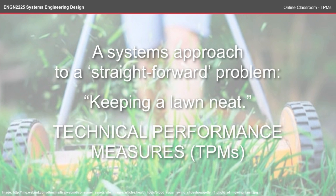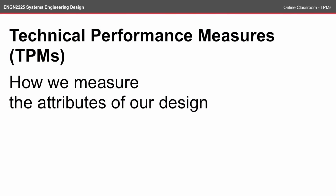In this episode of the online classroom, we're going to look at technical performance measures for a systems approach to a straightforward problem: keeping a lawn neat. Technical performance measures, often called TPMs, are how we measure the attributes of our design. This helps us understand how we will measure and whether or not the design meets our customers' expectations.